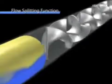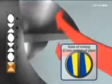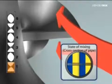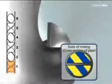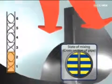The first one is the flow splitting function. The first element divides the liquid into two flows, then the next element divides the flow again into another two flows, and the process is continued, splitting the liquid into two flows, four flows, eight flows, and so on.